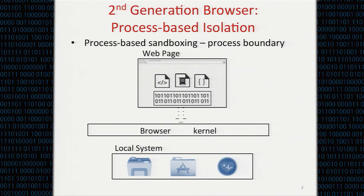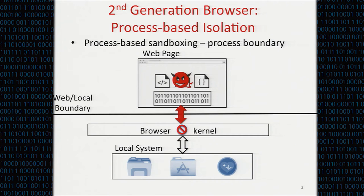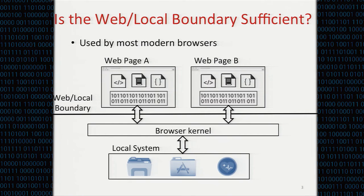This is beneficial, as the renderer has millions of lines of code. If there is a bug inside, the bug is confined within the renderer process, which prevents the exploit from directly accessing the local system. This is what we call the web-local boundary in the browser — basically, websites cannot directly access the local system and get the local data of the user. Many browsers like Chrome and IE have already adopted this design, and Firefox is starting to use it as well.